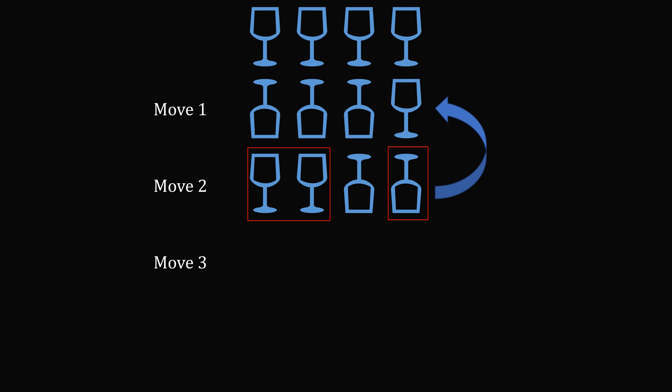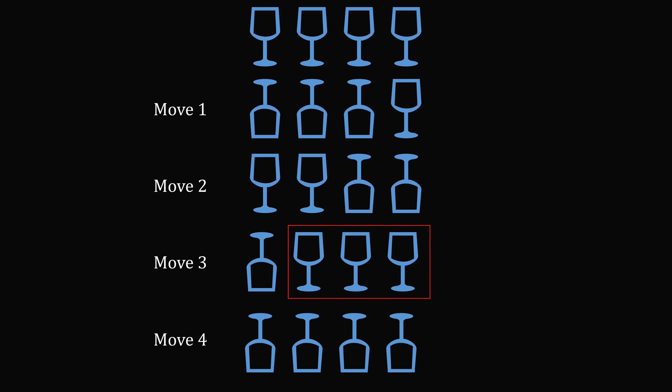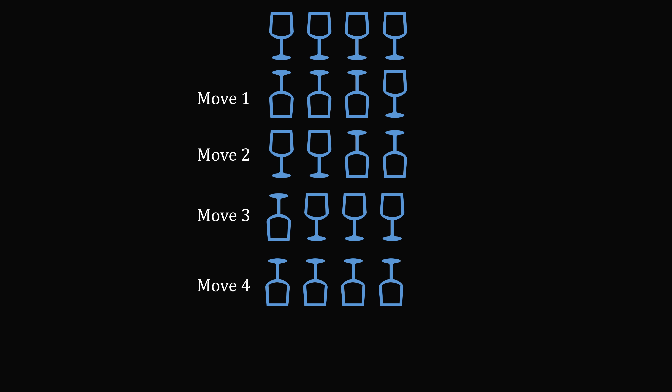So we need to pick the two glasses that are down and one of the glasses that's up. That results in one glass down and three glasses up. Then we just invert the three glasses that are up and all four glasses are down. If we do any other move in this step, we get a different result. So this is the move we want, and we've completed the objective. The answer is we can do this in four moves, and this is the minimum number of moves.